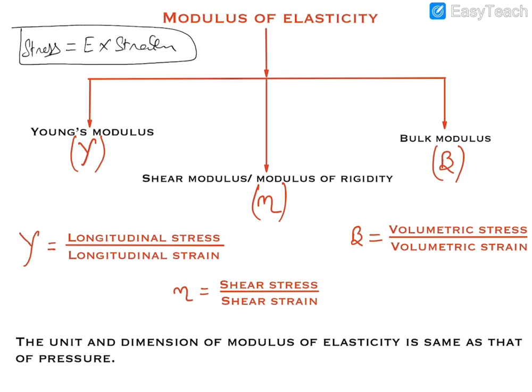Bulk modulus is the ratio of volumetric stress and volumetric strain. Volumetric stress is the stress developed in a body when its volume changes, or we can also say that volumetric stress is itself pressure. Volumetric strain is the change in volume divided by the original volume of the body.